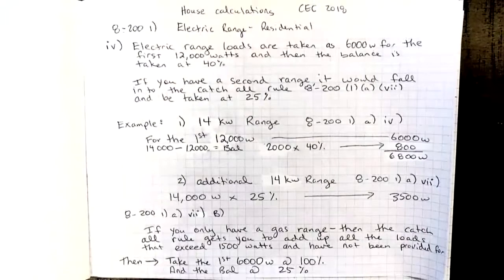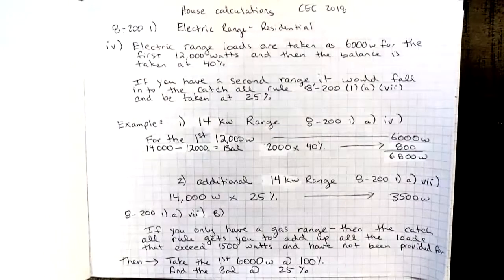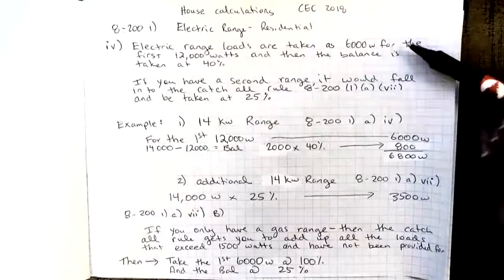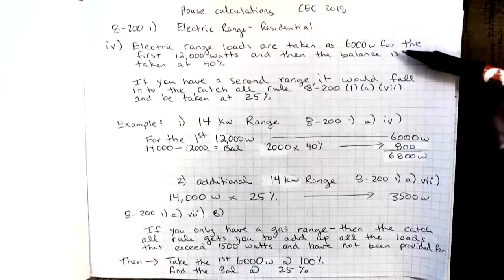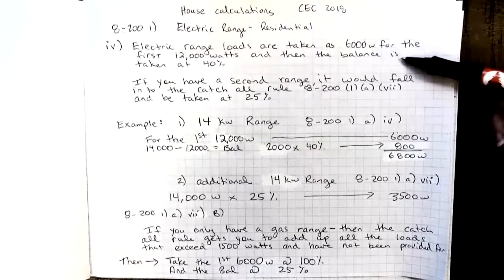And specifically, this is on the electric range, so it's item 4. The electric range loads are taken at 6,000 watts for the first 12,000 watts, and then the balance is taken at 40%.